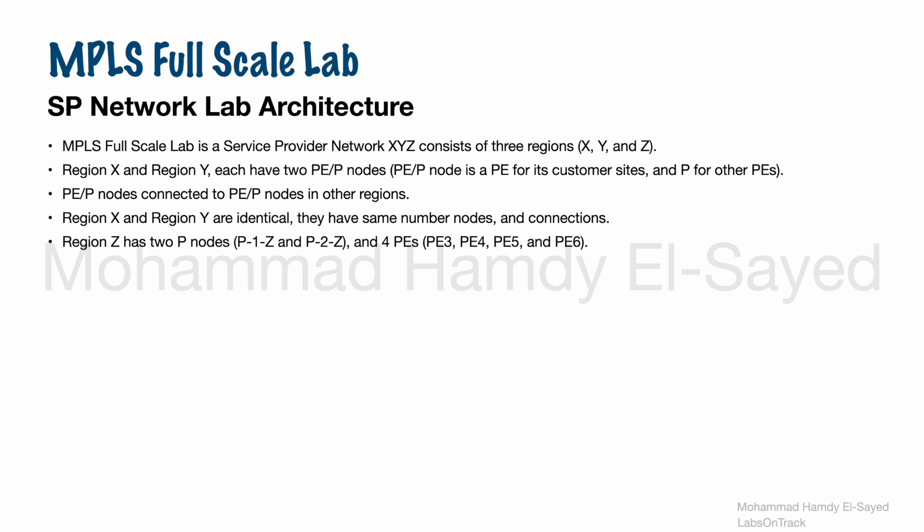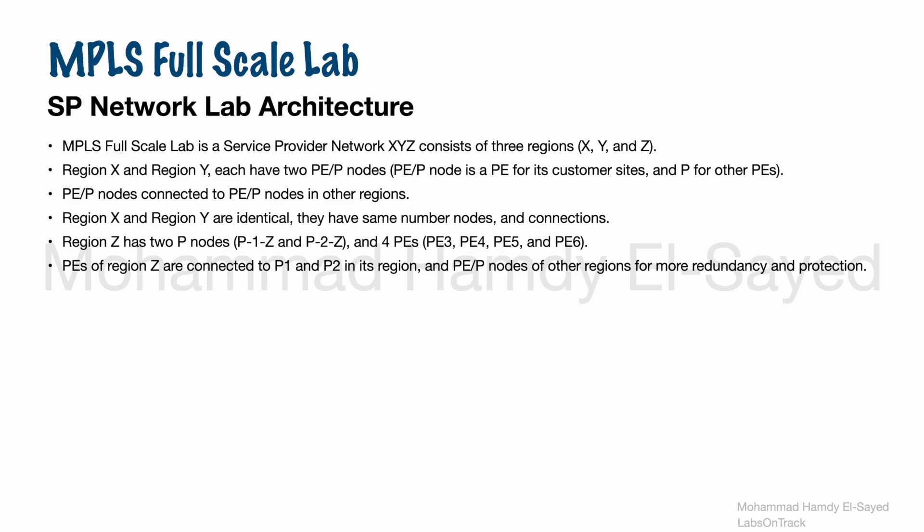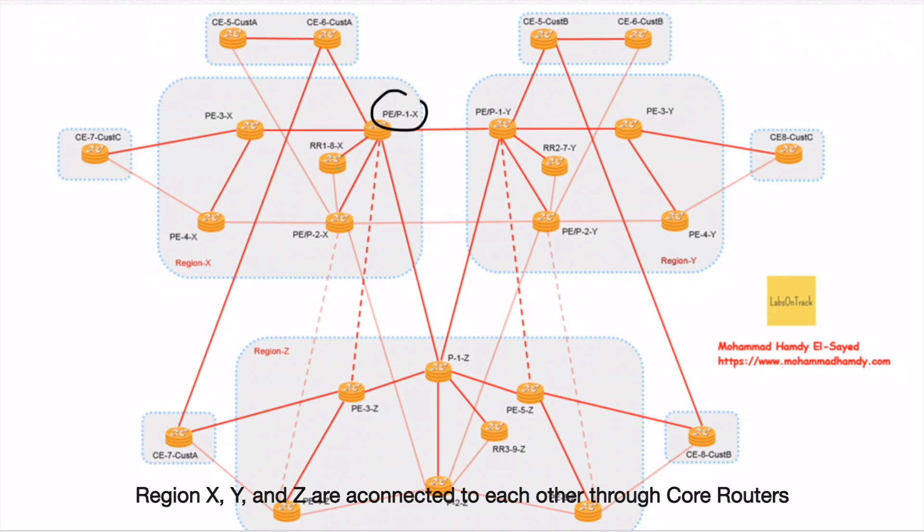PE routers are connected to P routers in the region and they are connected to PEP routers in other regions, like PE3Z, PE4Z connected to PE1X and PE2X, and same for PE5 and PE6. All three regions are connected to each other using the core routers, the P routers. P1X is connected to P1Y and is connected to P1Z, and same for other P routers.